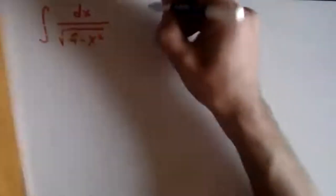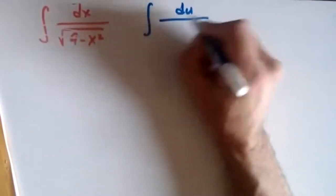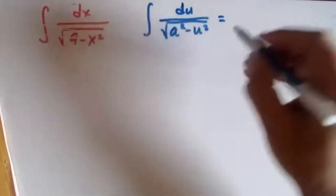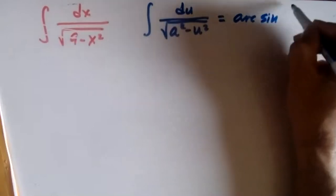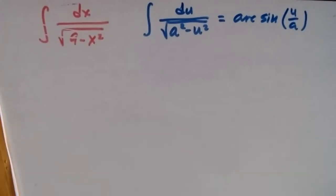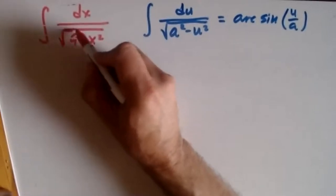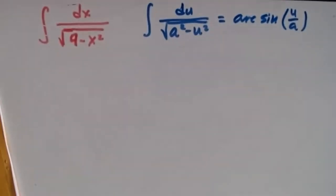The second formula at the bottom has a u outside the square root, meaning you need an x there — but I don't have an x, so that one won't work. The useful formula is: integral of du over the square root of a squared minus u squared equals arcsin(u/a). I need to match my expression to that formula.